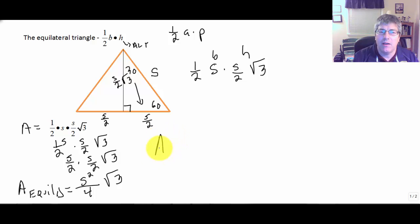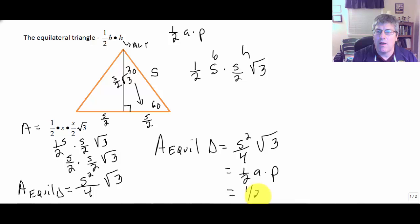The area of an equilateral triangle is side squared over 4 times the square root of 3. It's also 1/2 A times P. It's also 1/2 base times height. So you use one of those three formulas. It doesn't matter which, but it might,